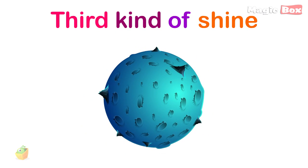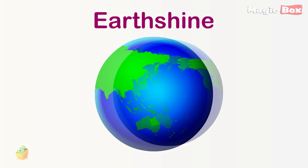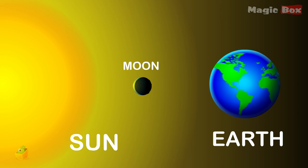There's also a third kind of shine. It's called Earthshine, meaning sunlight reflected by the Earth.